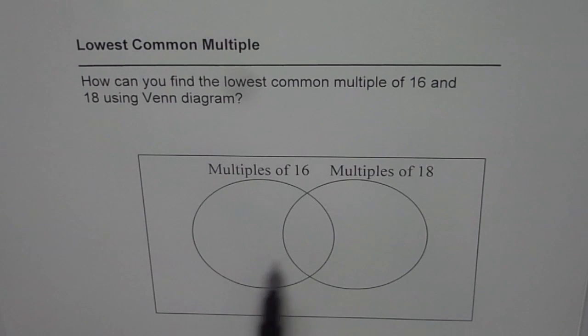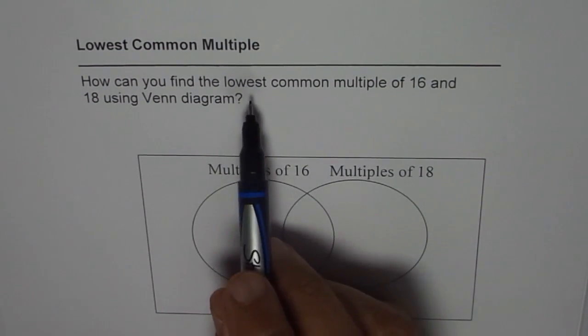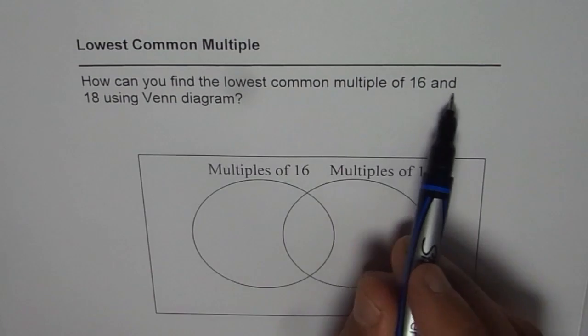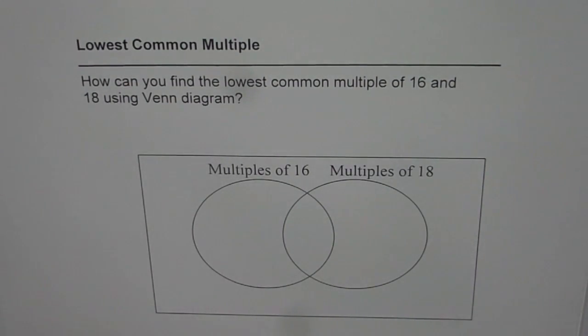So that is how a Venn diagram can be made. I'd like you to pause the video, answer the question, and then look into my suggestion. So we have to use a Venn diagram to find the lowest common multiple of 16 and 18. So what strategy can we use?